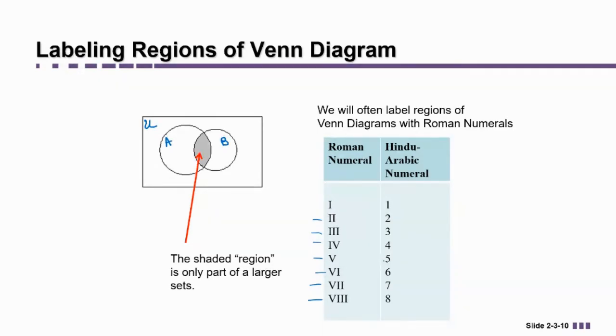The reason I number them using Roman numerals instead of our regular Hindu-Arabic numeral system is because a lot of times we'll use these regular numbers to indicate how many elements are in a particular region. So I don't want to confuse the two.